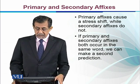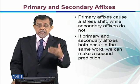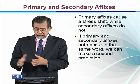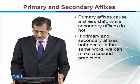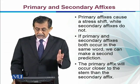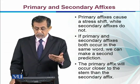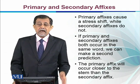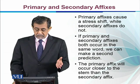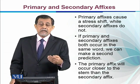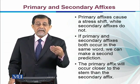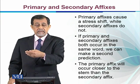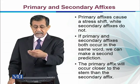If primary and secondary affixes both occur in the same word, the primary affix will occur closer to the stem than the secondary. So the order is: primary first, then secondary. For example, taking the primary suffix -ian, 'Mendelian' can then take the secondary suffix -ism to form 'Mendelianism.'